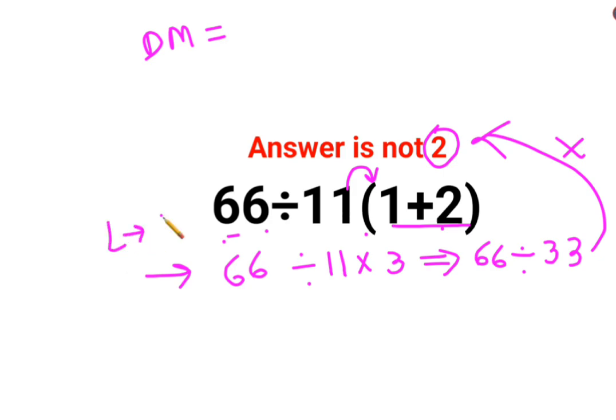In this case, you will always go from left to right. This is universal. You need to first do the division. So 66 divided by 11 is 6 multiplied by 3. The answer for this question is supposed to be 18.